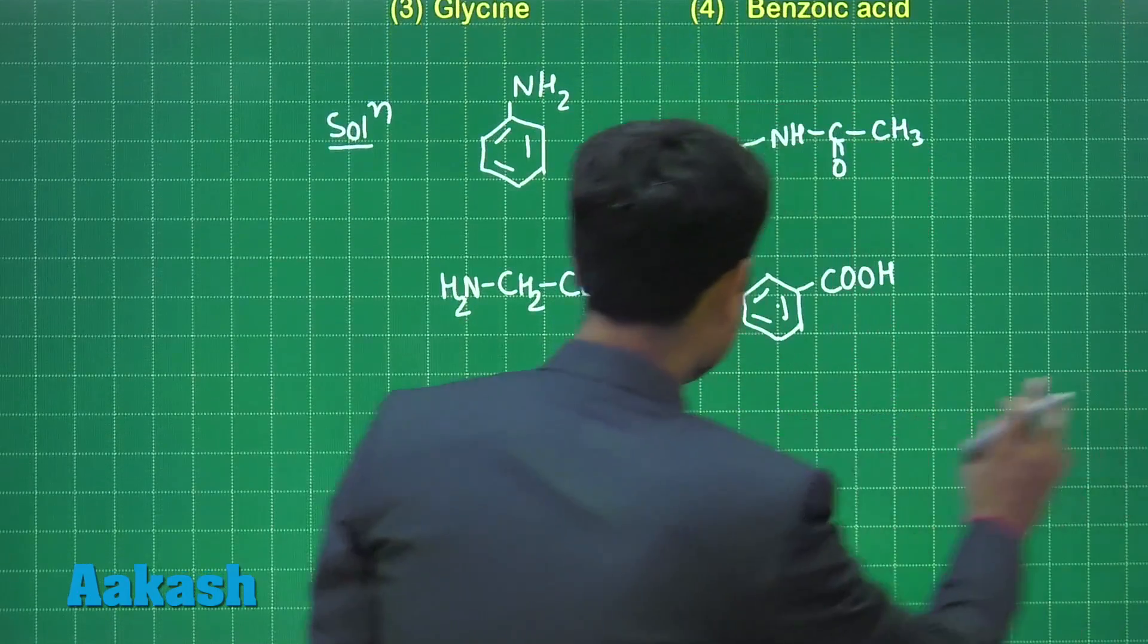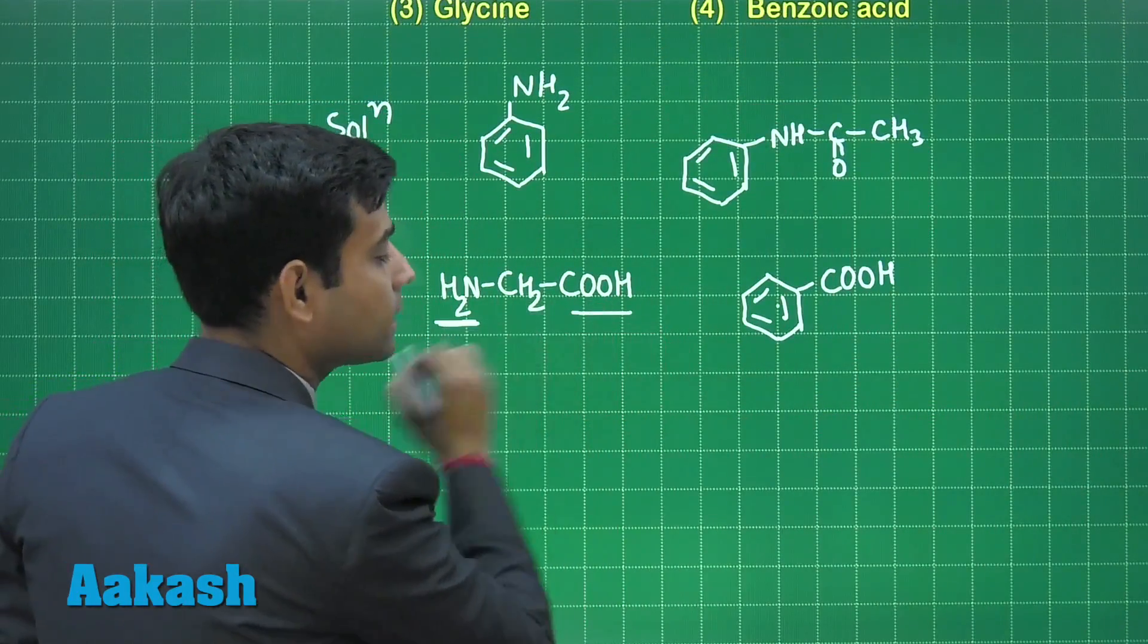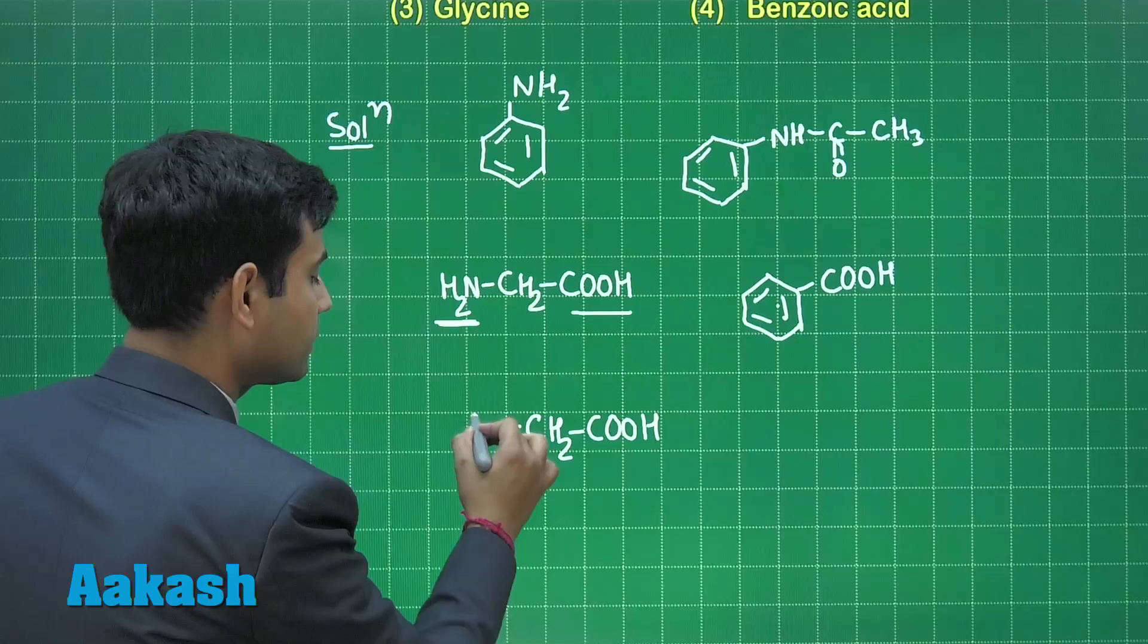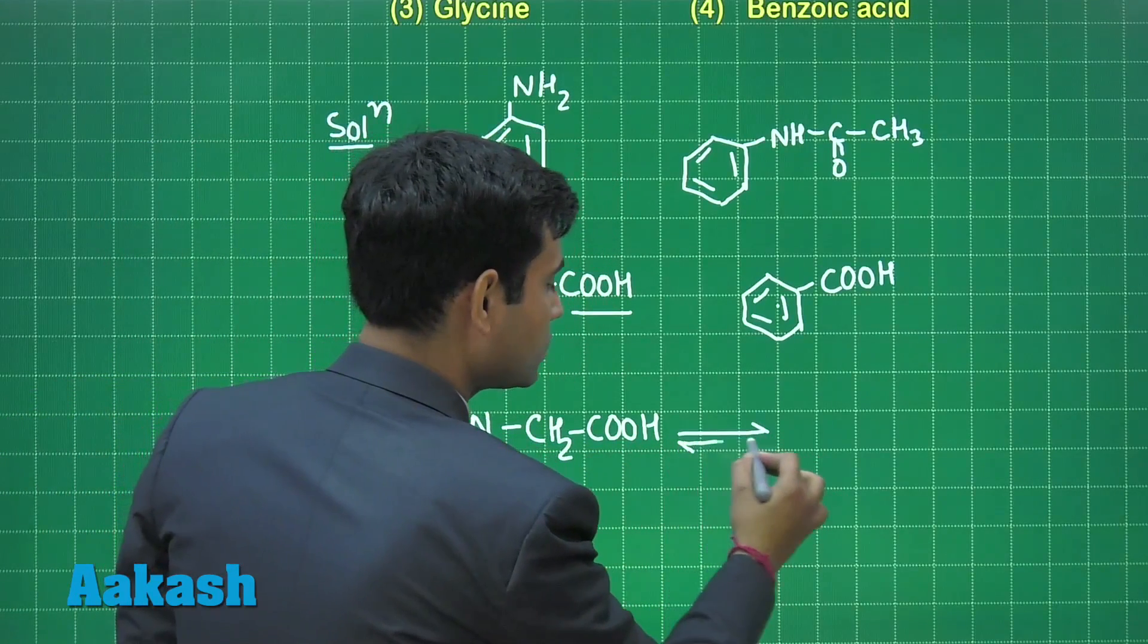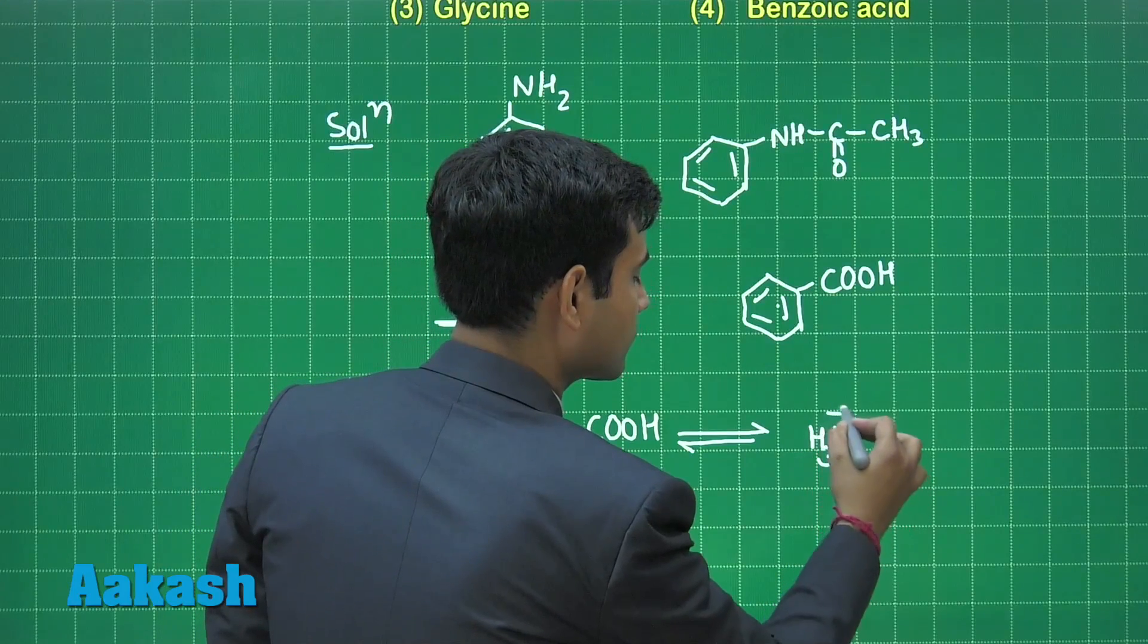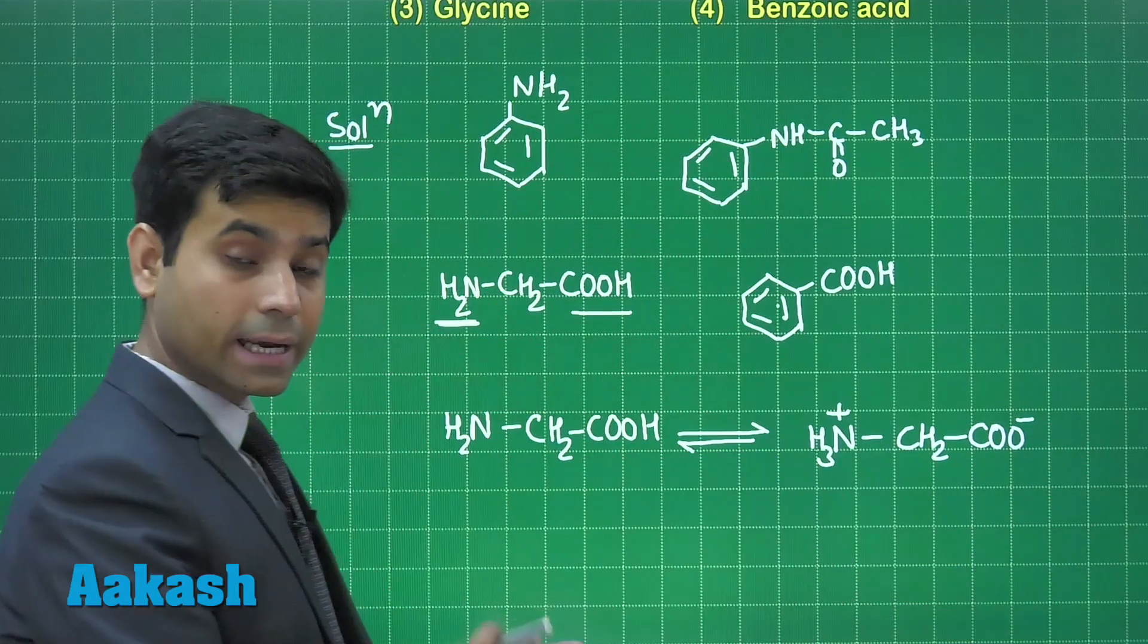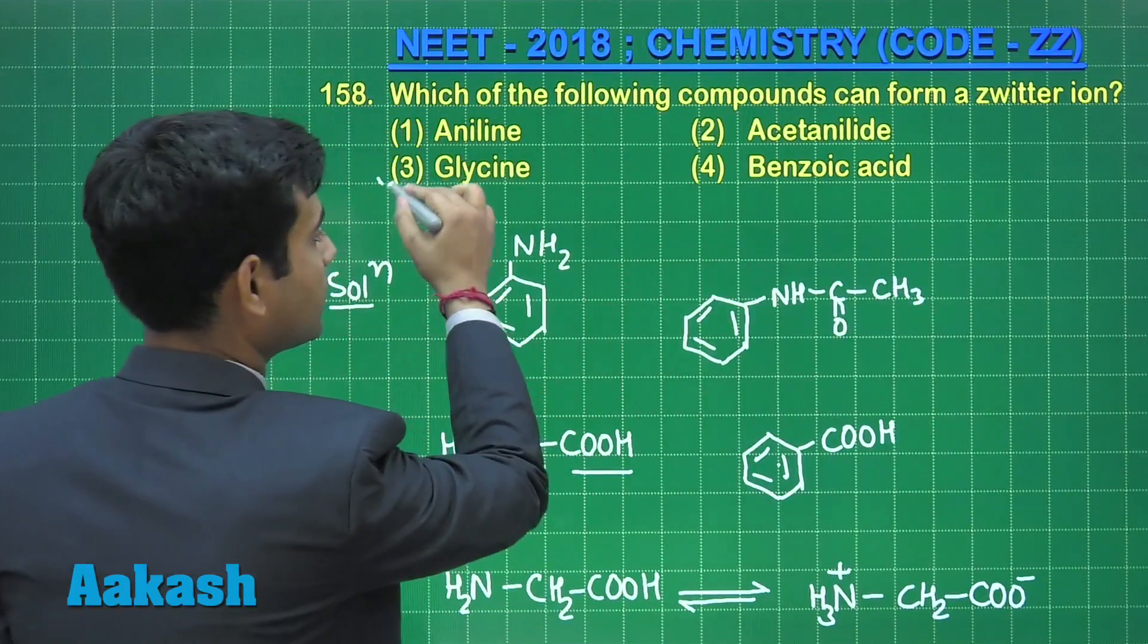So out of these options only glycine can form because it has basic group here as well as acidic group. So glycine at its isoelectric point will form zwitterion. So the correct answer for this question is option 3, that is glycine.